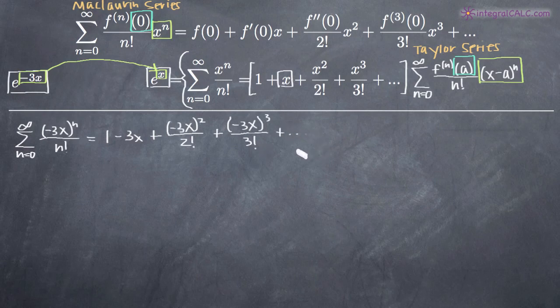And we can continue writing our series. So this is really all we have to do to write the Maclaurin series for the function e to the negative 3x.